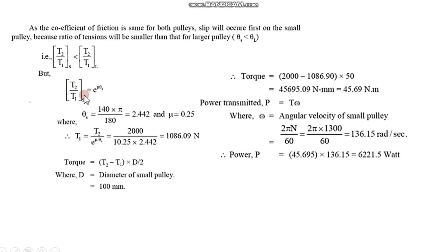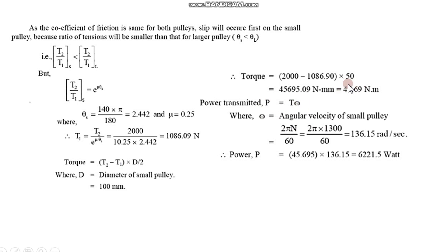θ for the smaller pulley will be smaller than θ for the larger one. We find T2 and T1. T2 minus T1 is calculated. Radius is diameter divided by 2, and this gives the torque. Power equals torque times angular velocity. Substituting the values, the angle in radians and angular velocity are used to compute the final power output.